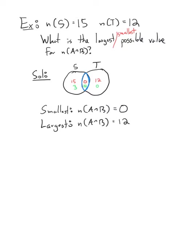A quick note: what this is saying is that everything in T — all elements of T — are also elements of S. This happens when T is a subset of S. You always get the largest possible intersection when T is a subset of S. There's no way for S to be a subset of T because there are too many elements in S — 15 versus 12 — but it is possible the other way around.